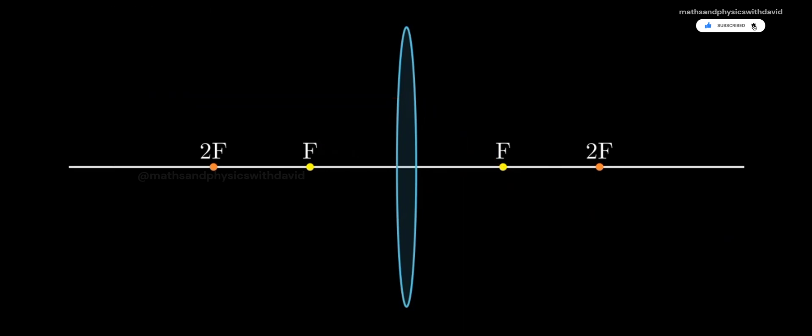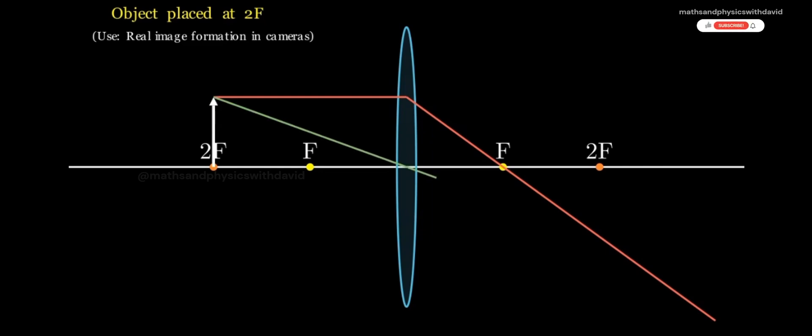Case 2, Object on 2F. Again, draw a ray from the top of the object parallel to the axis. After refraction, it passes through the focus. Then draw another ray through the center of the lens, which goes straight without bending.